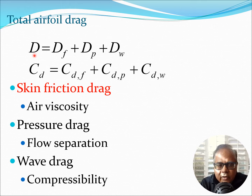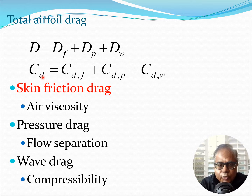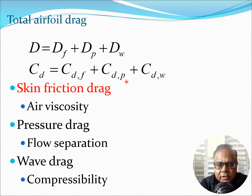We can write the total drag coefficient as CD = CD_f + CD_p + CD_w, where f is friction, p is pressure, and w is wave drag.